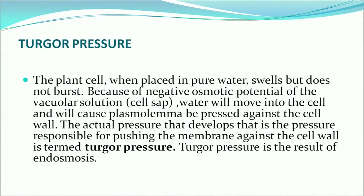What is turgor pressure? When a plant cell is placed in pure water it swells, but it does not burst because of the negative osmotic potential of the vacuole solution — that is, the cell sap. Water moves into the cell and causes the plasma membrane to press against the cell wall. The actual pressure responsible for pushing the membrane against the cell wall is called turgor pressure. Turgor pressure is the result of endosmosis and it allows the plant cell to stretch but does not allow the cell to burst.